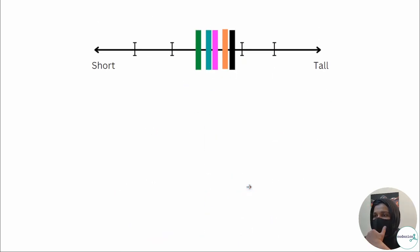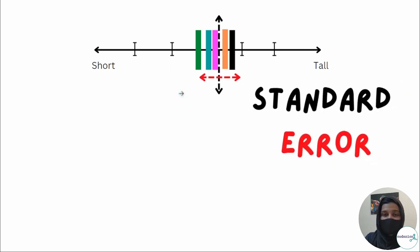Now if we plot each group's average on a number line, we have the average of each group plotted as points. Then we can calculate the variation between these averages. When we find the standard deviation of these means - the mean of the means - this is called standard error. Standard deviation of the mean is equal to standard error.